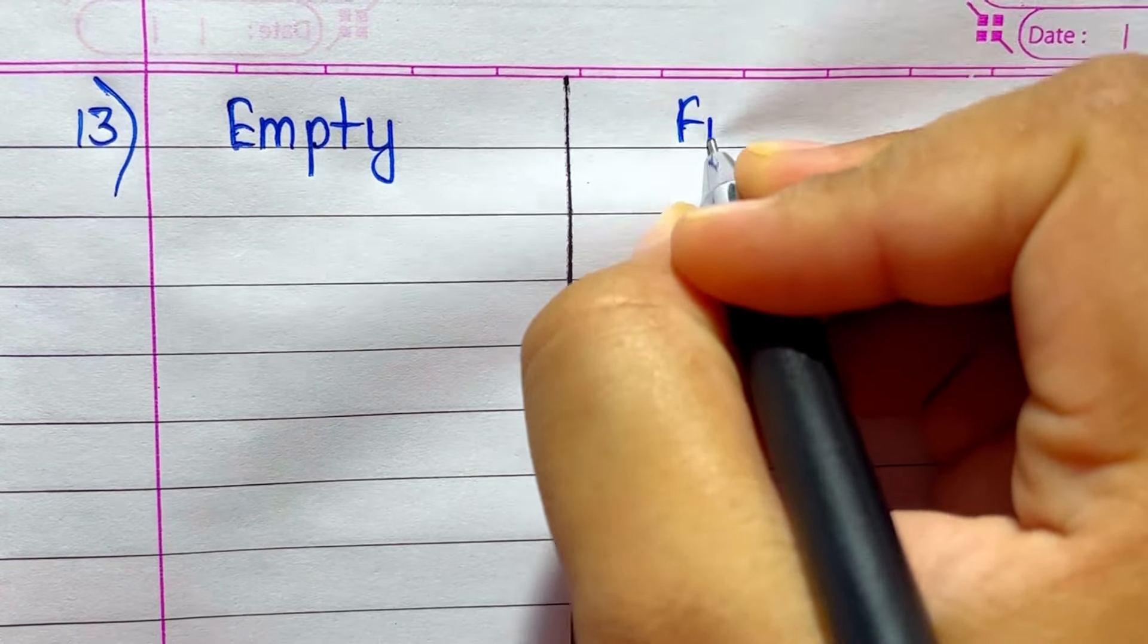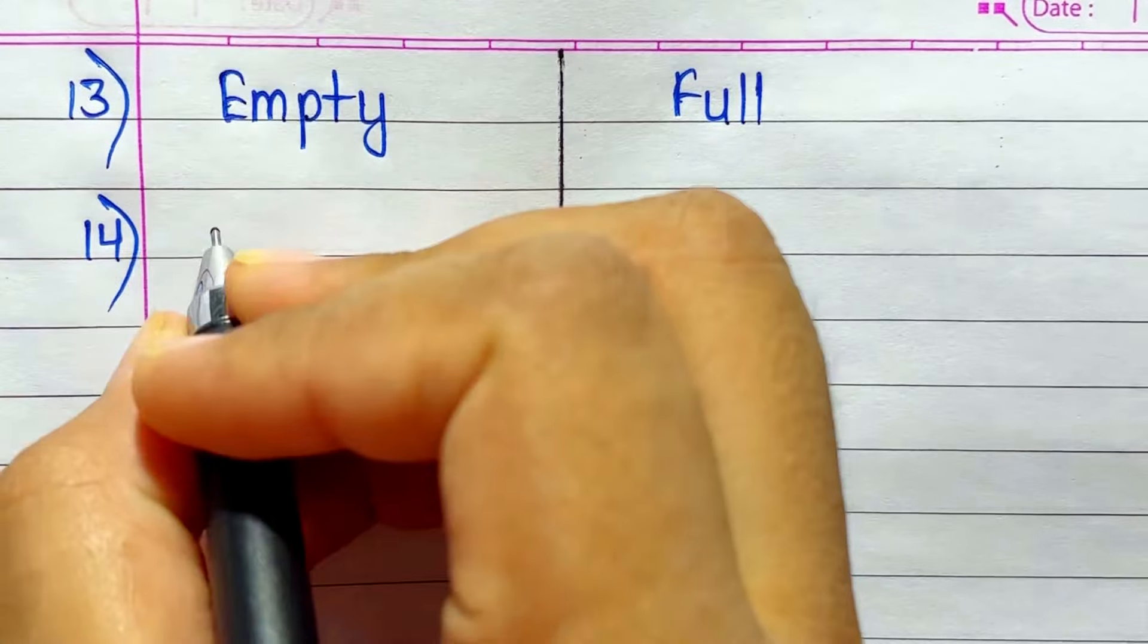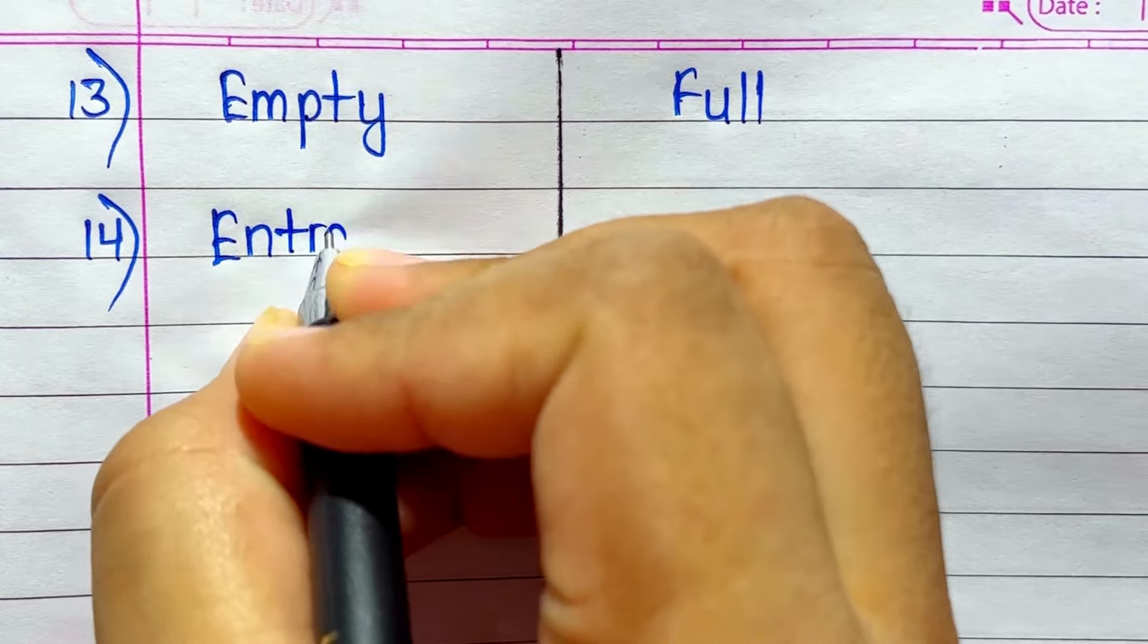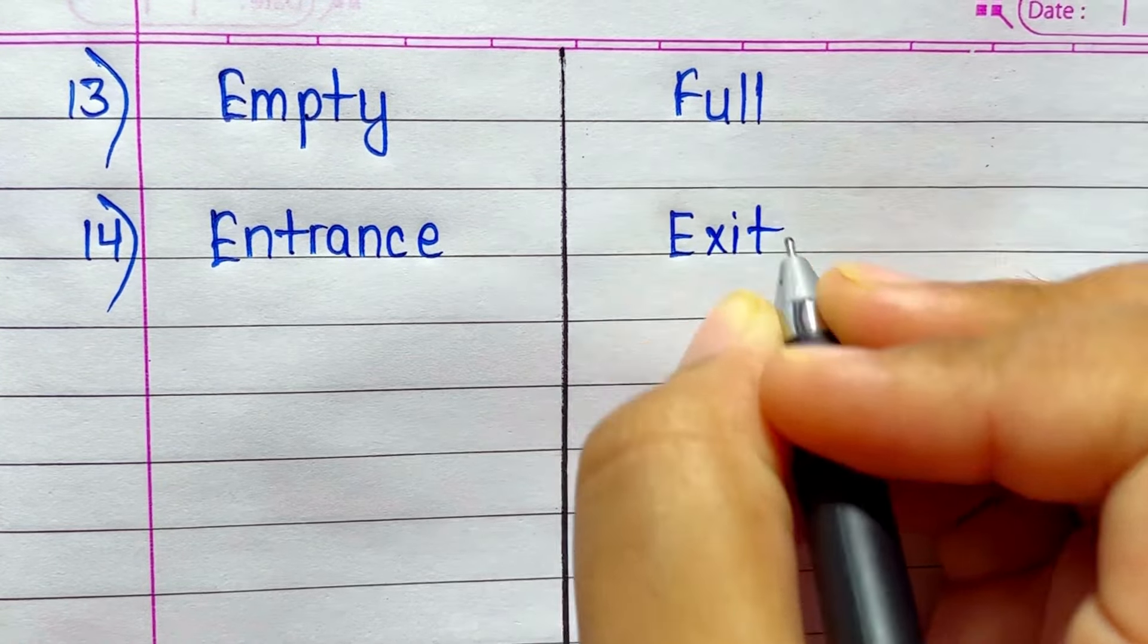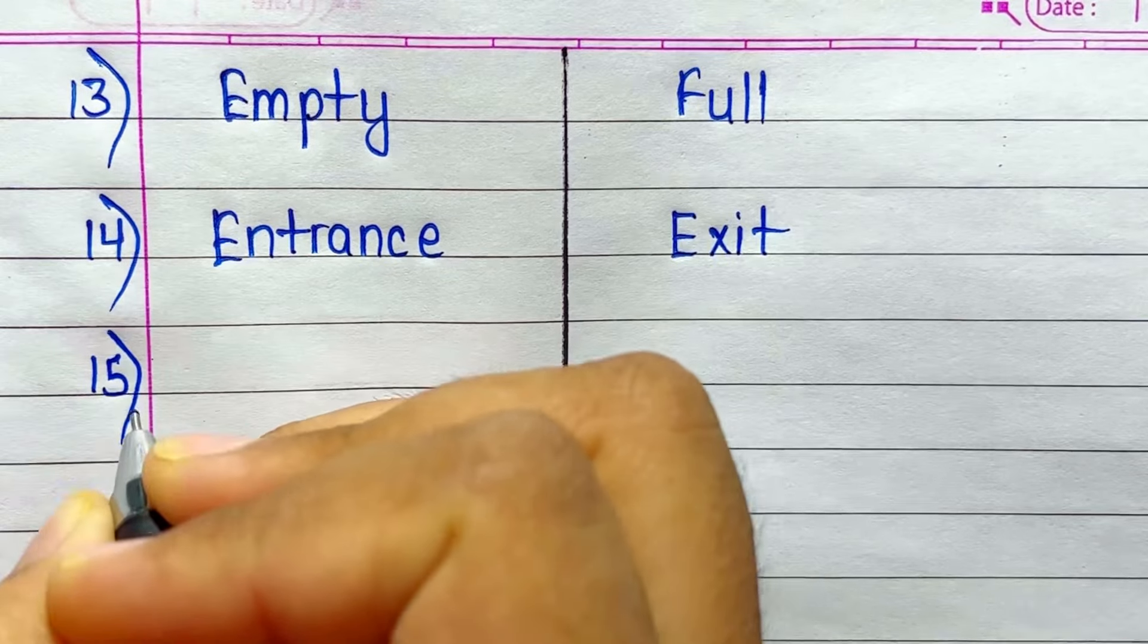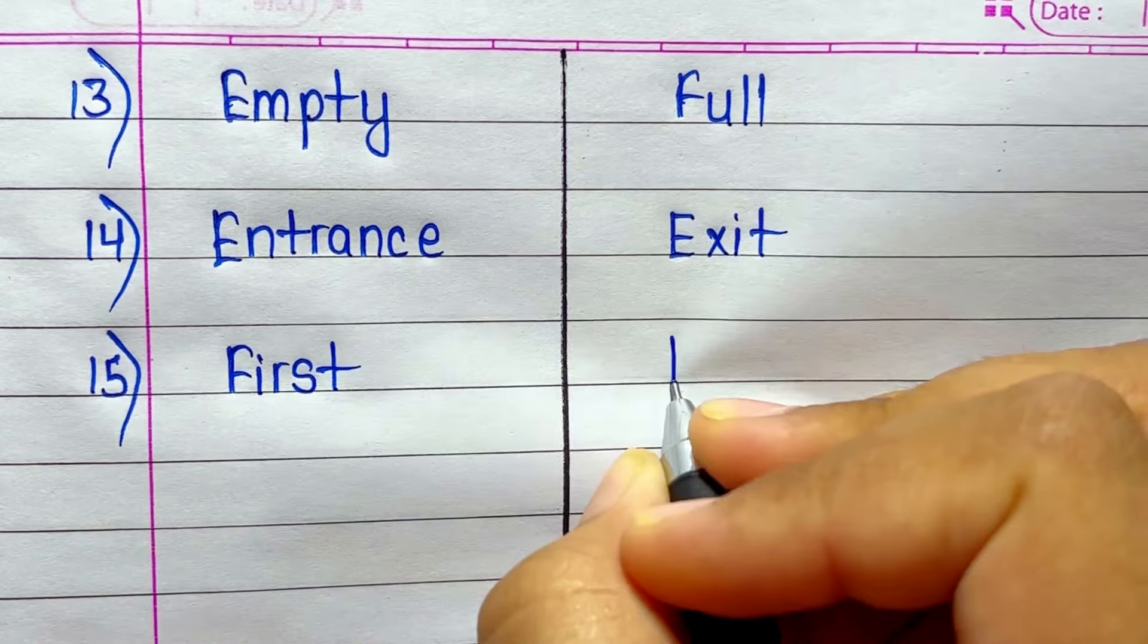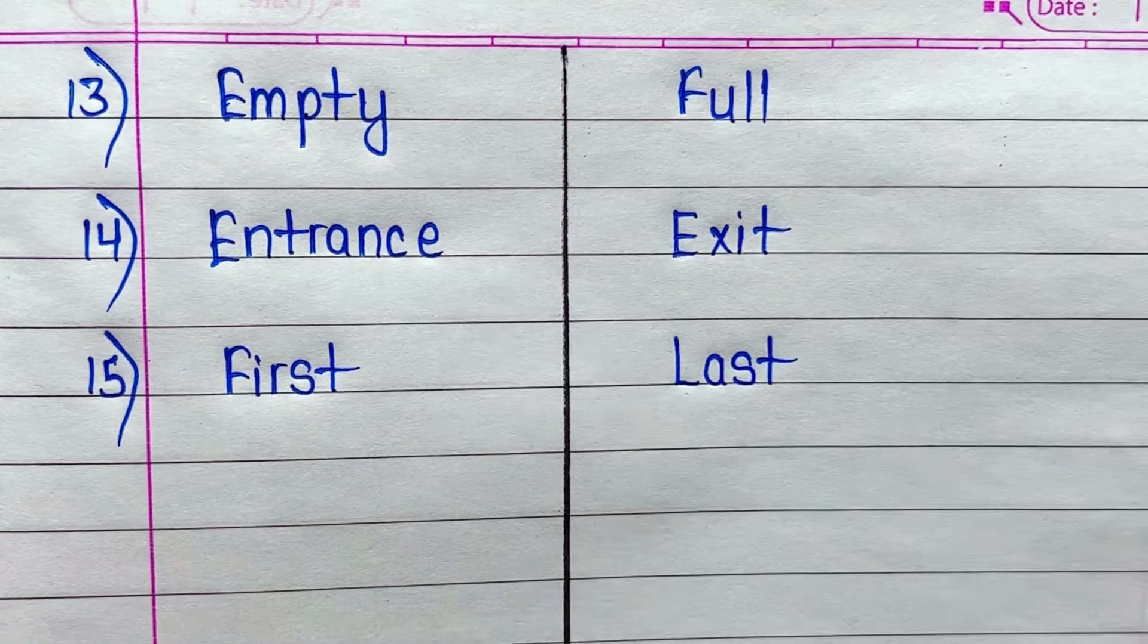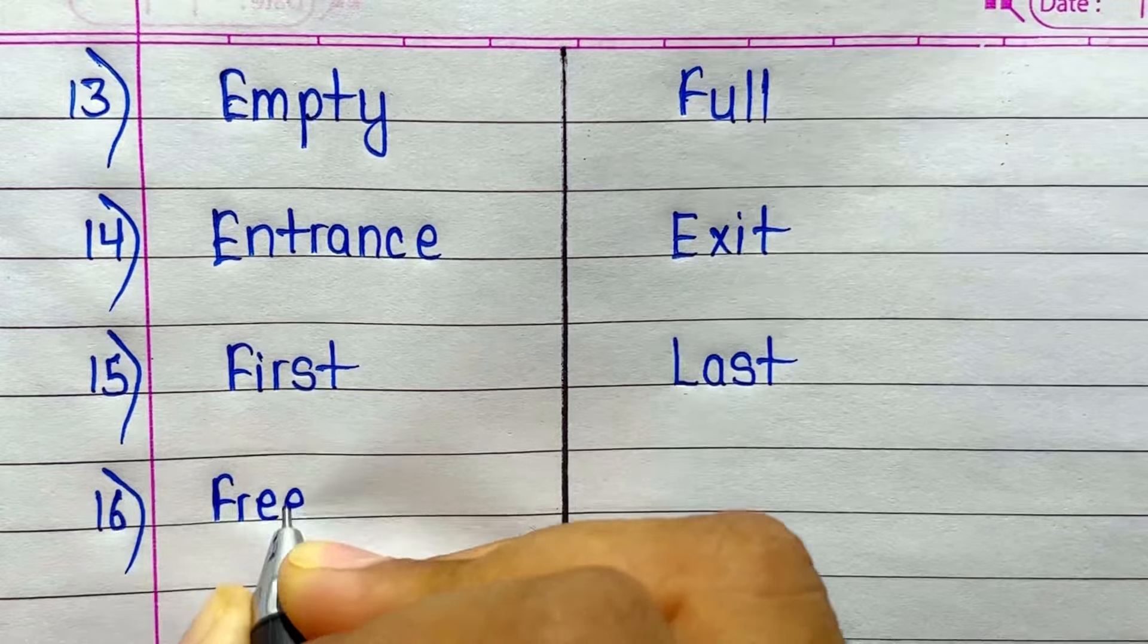Next is Empty. Antonym of Empty is Full. Next is Entrance. Antonym of Entrance is Exit. First. Antonym of First is Last.